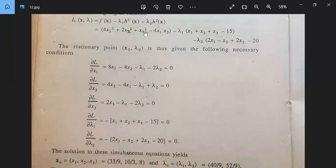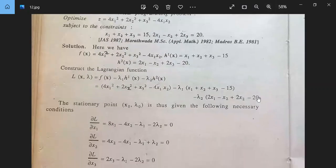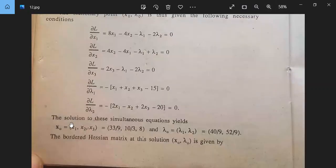With respect to x_3, so 2x_3 minus lambda_1 minus 2 lambda_2 equal to 0. And del L by del lambda_1, so x_1 plus x_2 plus x_3 minus 15 equal to 0. And del L by del lambda_2 will be 2x_1 minus x_2 plus 2x_3 minus 20 equal to 0. These 5 equations have x_1, x_2, x_3, lambda_1, lambda_2, 5 unknowns.